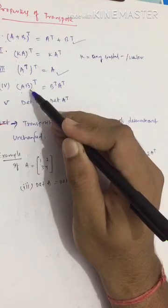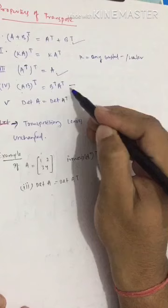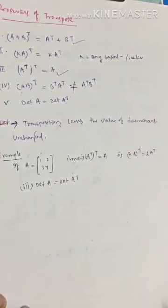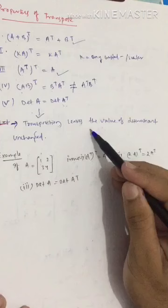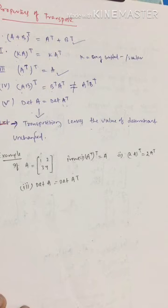The fourth property is: (AB)-transpose = B-transpose · A-transpose — very important to remember, it is NOT equal to A-transpose · B-transpose. The fifth and final property is: determinant of A = determinant of A-transpose. In other words, transposition leaves the value of the determinant unchanged.